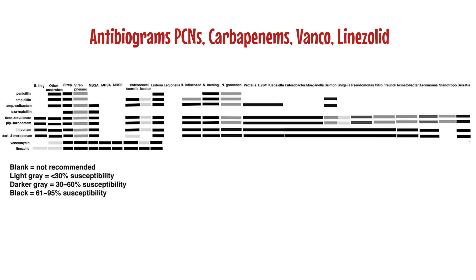Here are the antibiograms for all of these antibiotics. On the top horizontal row is a list of all the bacterial pathogens, beginning with anaerobes, followed by gram-positive bacteria, and then gram-negative bacteria. The vertical axis lists the different antibiotics, beginning with the penicillins. A black square indicates that a pathogen is sensitive 61 to 95% of the time. Darker gray denotes 30 to 60% sensitivity; light gray, less than 30%. An open space indicates the antibiotic is not effective. Penicillin shows only a few black squares, indicating it is a narrow-spectrum antibiotic, while piperacillin-tazobactam and the carbapenems — imipenem, doripenem, and meropenem — have many black squares, indicating they kill a very broad spectrum of bacteria.